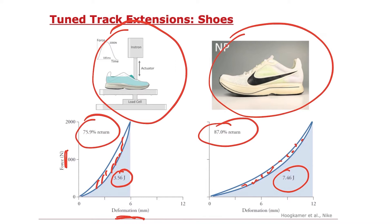When 18 elite athletes ran in these shoes, their energetic cost of running decreased by an average of 4% compared to standard marathon running shoes — providing an advantage much like the tuned track that was developed four decades earlier.